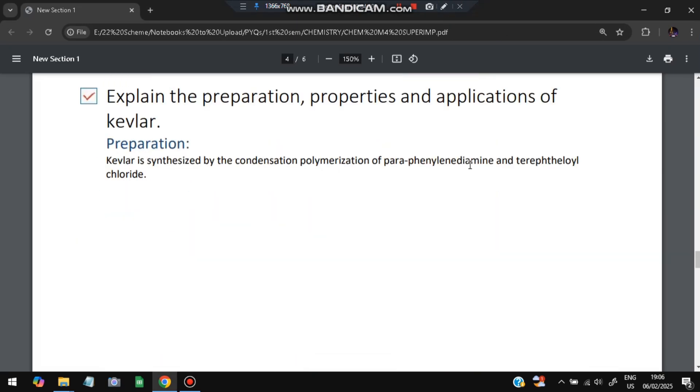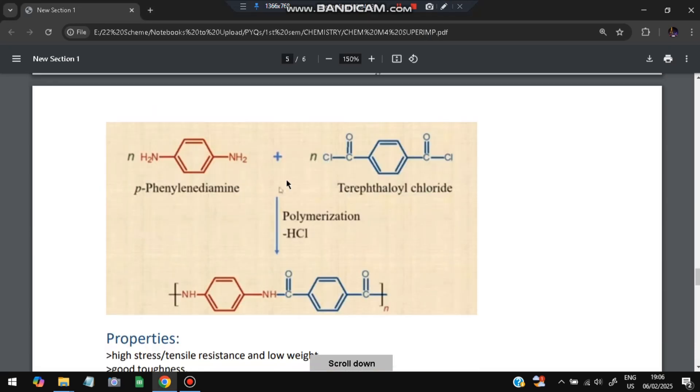Moving on to the next important question: explain the preparation, properties, and application of Kevlar. What is Kevlar? It is synthesized by condensation polymerization. It is synthesized by the condensation polymerization of para phenylenediamine and terephthaloyl chloride. By the polymerization condensation of these two we'll be getting the Kevlar. So what does Kevlar look like? It will look like this. This is the phenylenediamine and this is terephthaloyl chloride. When we do the polymerization we'll be getting Kevlar here.